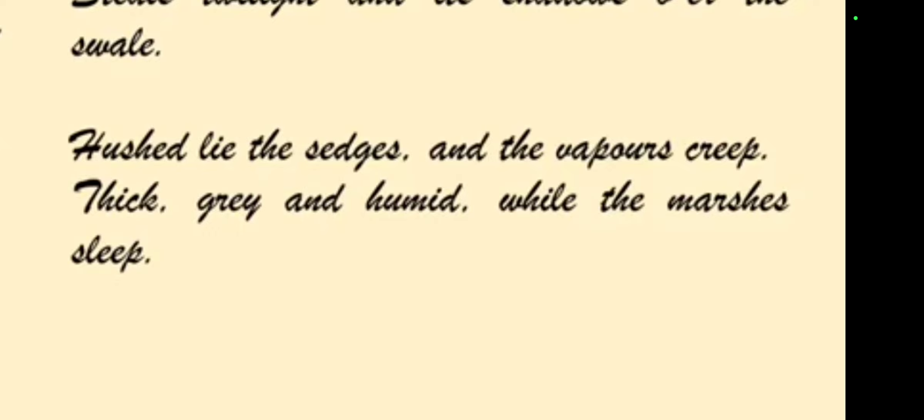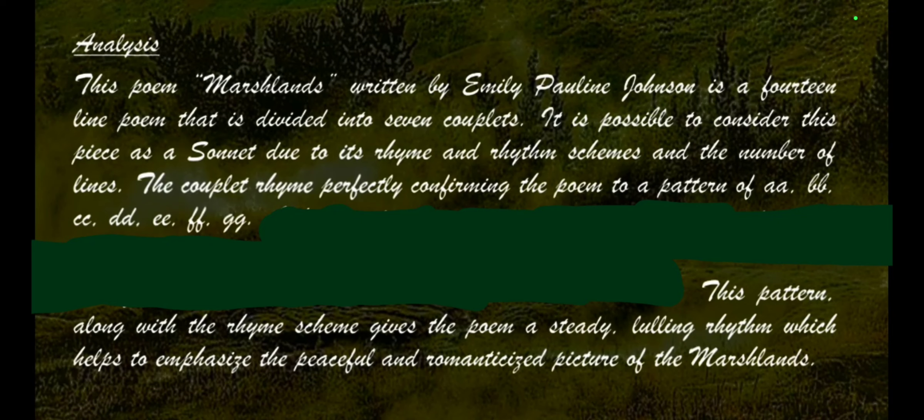The Analysis of the Poem: 'Marshlands,' composed by Emily Pauline Johnson, is a 14-line poem divided into seven couplets. It is possible to consider this piece as a sonnet due to its rhyme and rhythm schemes and the number of lines. The couplets rhyme perfectly, confirming the poem to a pattern of A-A, B-B, C-C, D-D, E-E, F-F, and G-G. This pattern, along with the rhyme scheme, gives the poem a steady, lulling rhythm, which helps to emphasize the peaceful and romanticized picture of the marshlands.